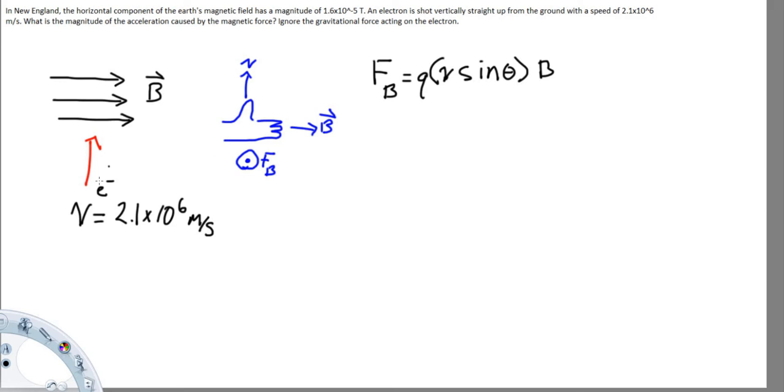So since the velocity is going in the upwards direction and the force of the magnetic field is coming out of the page, that is going to make it perpendicular. So sine of 90 is just going to be equal to 1. So now we can solve for this problem.